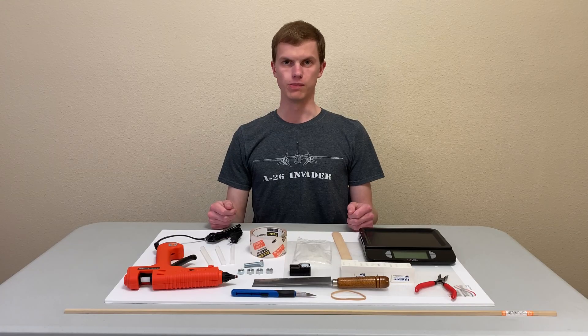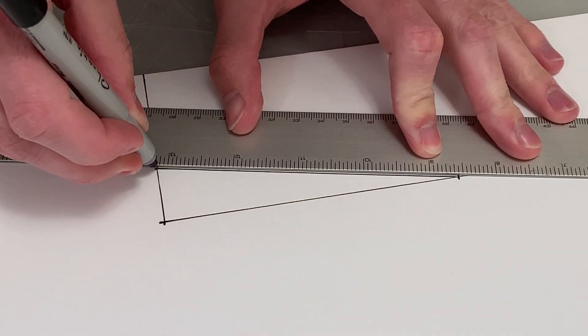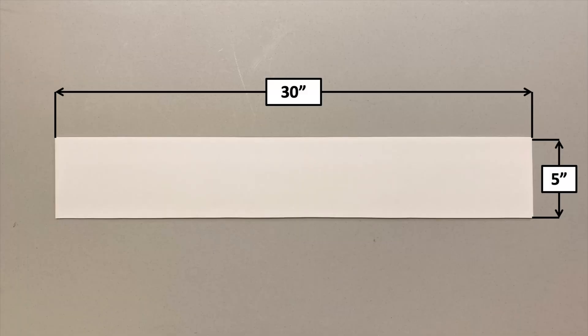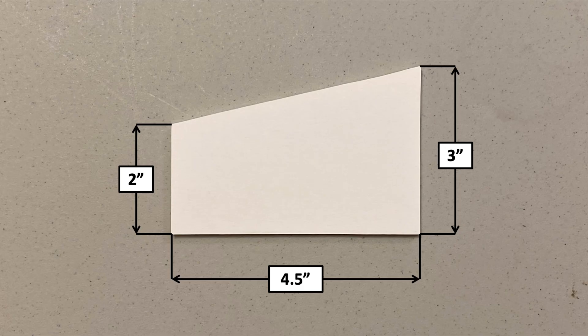Start by marking the outlines of your foam pieces and cutting them out with your exacto knife. For the wing, you'll need a piece with a 30-inch wingspan — about the width of a foam board sheet — and a 5-inch chord. For the horizontal stabilizer, you'll need a piece 10 inches wide with a 3-inch root chord and a 2-inch tip chord. For the vertical stabilizer, you'll need a piece 4.5 inches tall, also with a 2-inch tip chord and a 3-inch root chord. You can also experiment with different wing and tail shapes if you want a different look for your airplane.